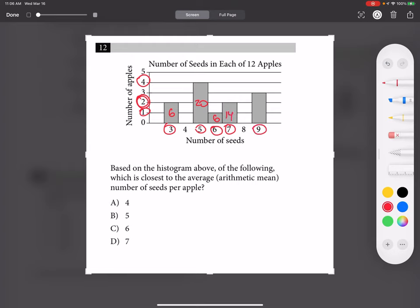Nine times three is twenty-seven. So twenty-seven plus fourteen plus six plus twenty plus six is seventy-three divided by twelve.